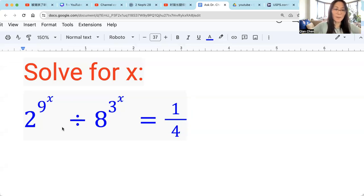Let's see this interesting question. So we want to solve for x. We have 2 raised by 9, then 9 raised by x, divided by 8 raised by 3, 3 raised by x equals 1 over 4.